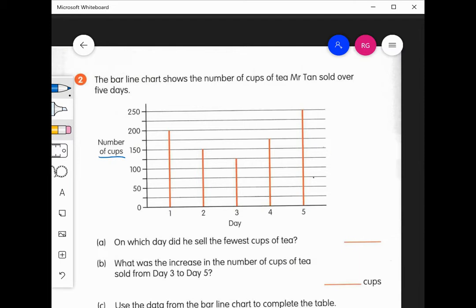So for the first question, it says, on which day did he sell the fewest cups of tea? All right, so we just look for day three there, is obviously the fewest.